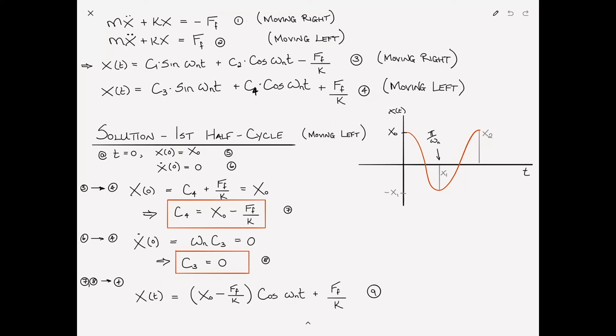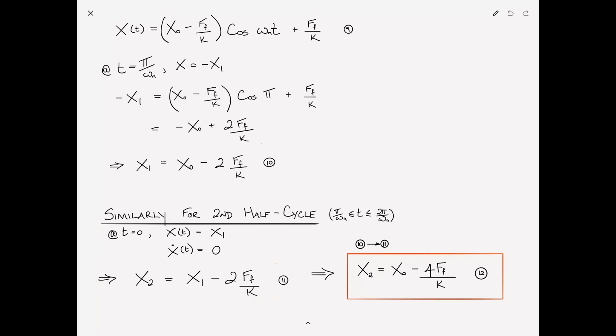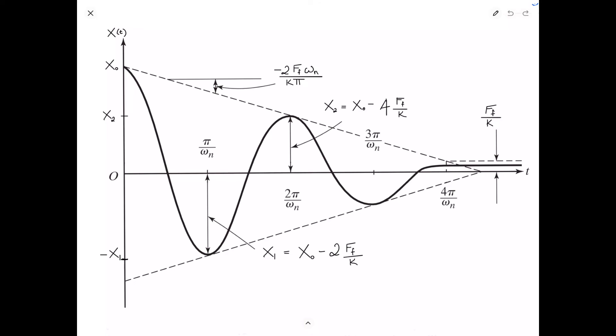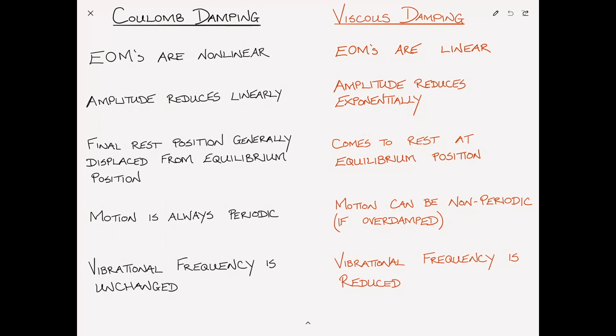We found that we could get analytical solutions by treating each cycle half a cycle at a time, treating each half cycle as an initial value problem. We went through substituting initial conditions for the first and second half cycles, then showed what a response curve looks like and the significance of each cycle — noting that peaks decay linearly, differently from viscous damping where they decay exponentially — with each successive peak decreasing by four F sub F over K.